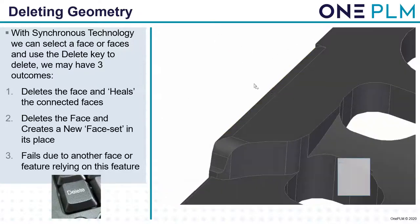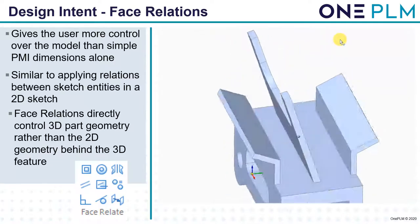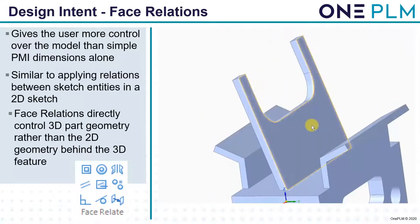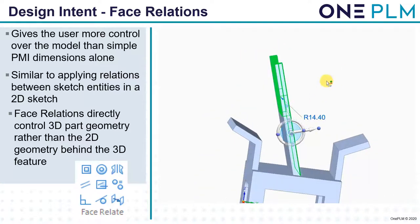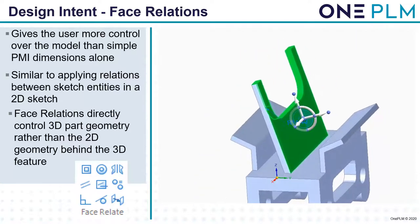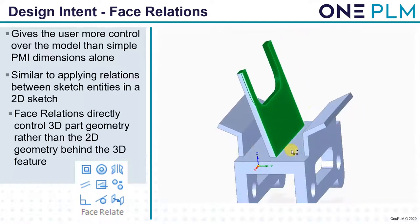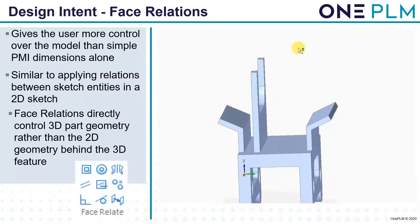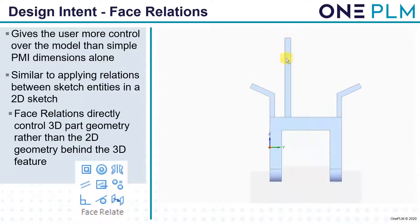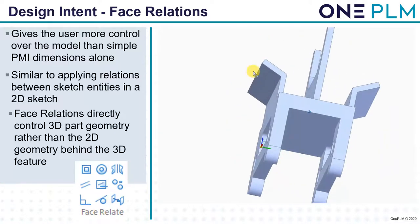Let's look at design intent — the face relationships we can create. This gives users more control over the model than simple PMI dimensions alone. Similar to applying relations between sketch entities in a 2D sketch, face relationships directly control the 3D part geometry rather than just the 2D geometry behind the 3D feature. We can apply lots of different types of relationships and we'll go through those over the next few slides.